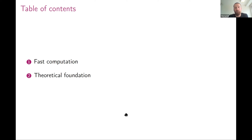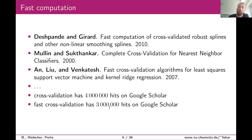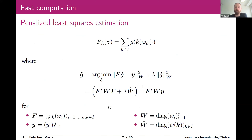A lot of work has been done on fast computation of the cross-validation score — for smoothing splines, nearest neighbors, and support vector machines. Searching for 'cross-validation computation' yields around 4 million hits, of which 3 million concern fast computation. We also wanted our share and tried to compute the cross-validation score in a fast manner in the context of penalized least squares estimation.